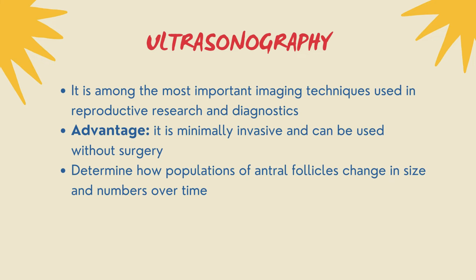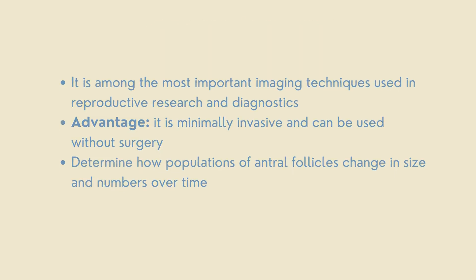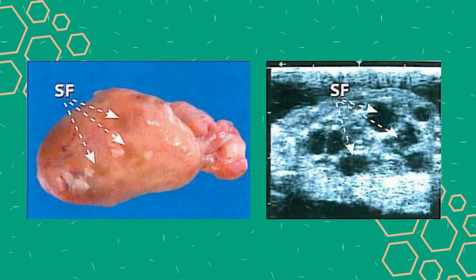With ultrasonography in large animals on a daily basis, one can determine how populations of antral follicles change in size and numbers over time. This illustration shows an ovary with small-size follicles on the surface and their respective ultrasonographic images. More follicles appear in the ultrasonographic image than in the photograph because ultrasound imaging allows observation of follicles beneath the surface of the ovary. Black images in the ultrasound are generated by fluid-filled cavities, while gray to white images are generated by dense tissue like the ovarian stroma.